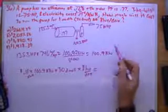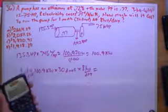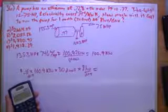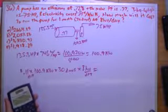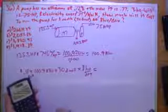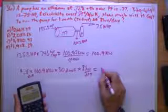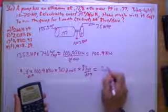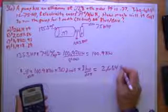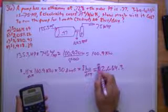And that's going to come out to... 100.9 in the calculator, so I'll go times 0.11, times 30, times 8, and that's going to be 2,664.3 dollars.